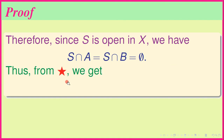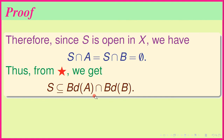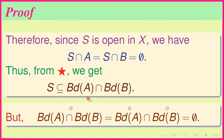Thus from (★), S is contained in Bd(A) ∩ Bd(B), since the other parts — A ∩ Bd(B) and B ∩ Bd(A) — contribute nothing because S has no elements in common with A or B. But the interior of Bd(A) ∩ Bd(B) equals (Bd(A))° ∩ (Bd(B))°, which is empty. So this set cannot contain any non-trivial open set, and since S is open, S must be the empty set.